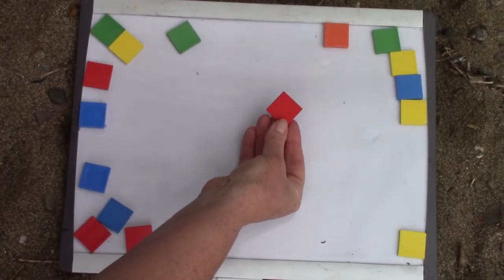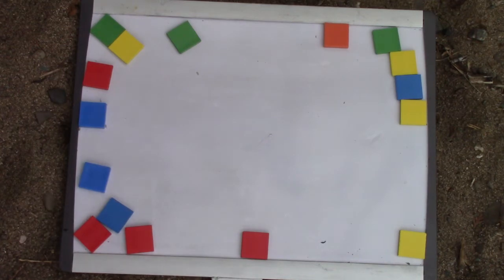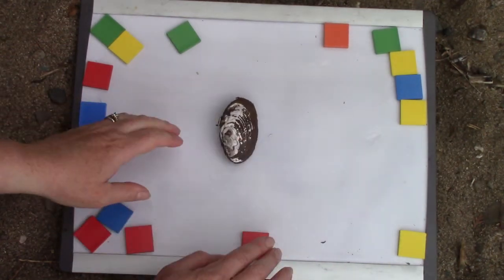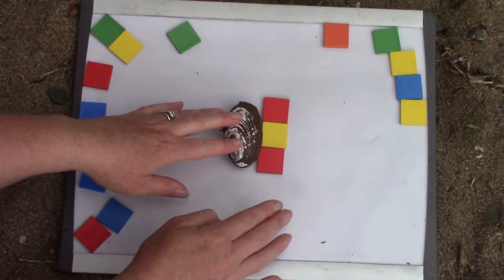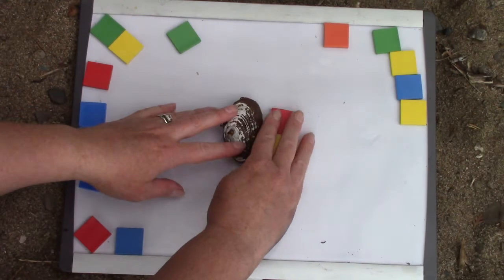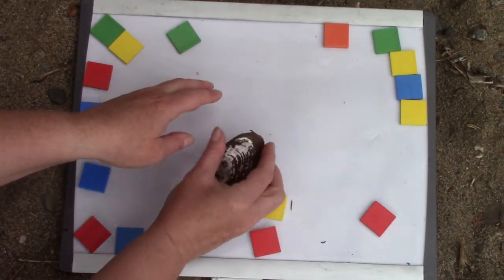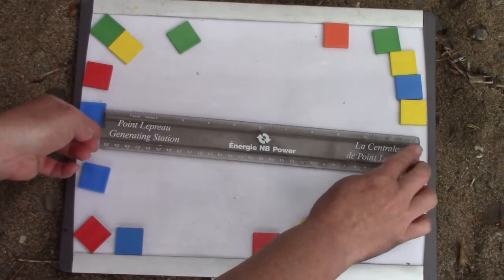Class before we have done some measuring with tiles and we took some items and we measured how tall they were and how wide or long they were. Today we're not going to be using tiles. Instead we are going to be using a ruler.